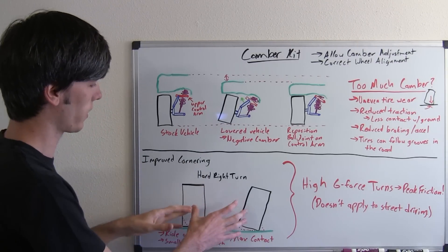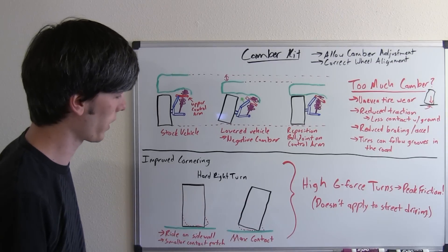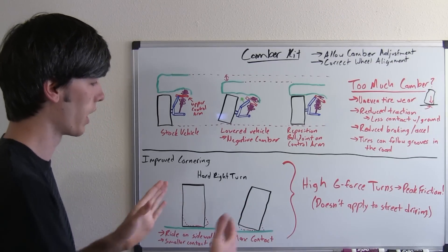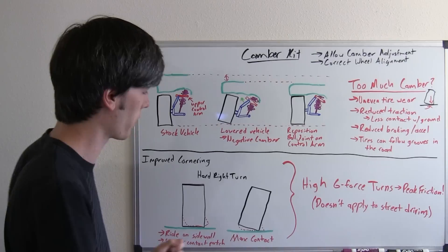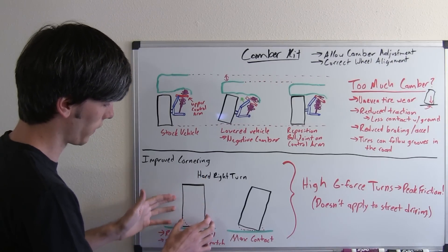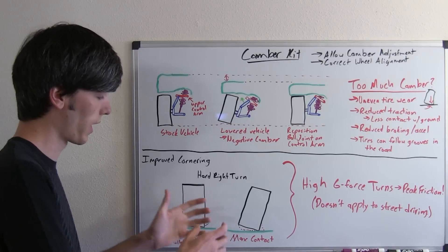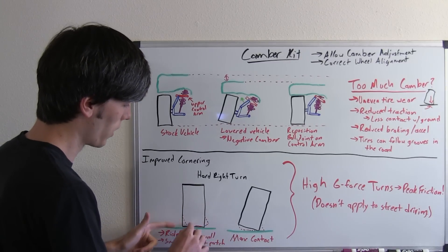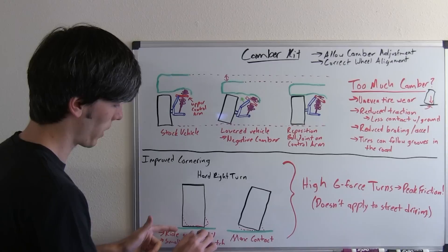So here we're looking at two tires, one without any camber and one with negative camber. We're going to be taking a hard right turn, turning this way really hard. What's going to happen is this tire here on the left is going to deform as you throw it into that turn due to the friction with the contact patch on the ground.